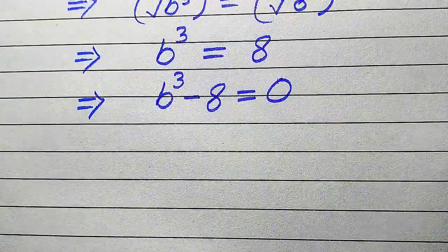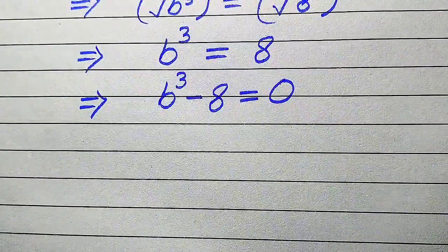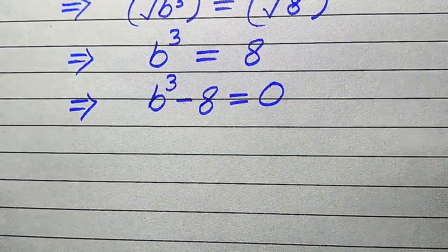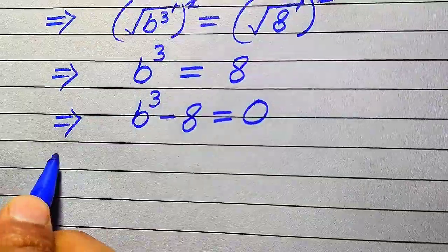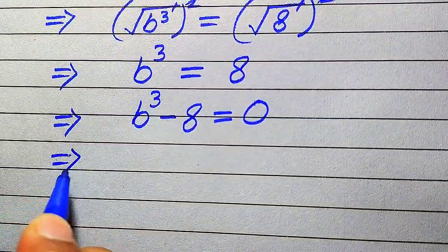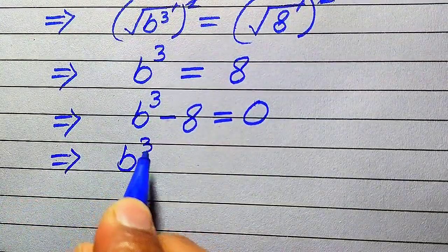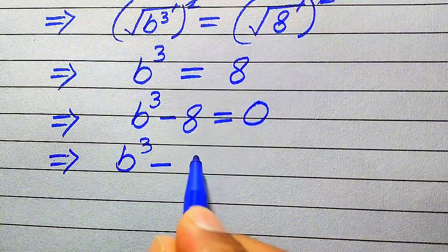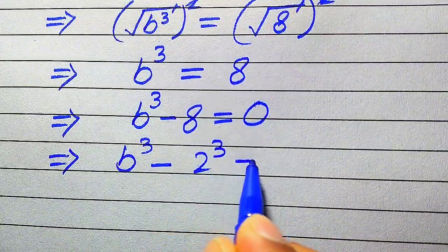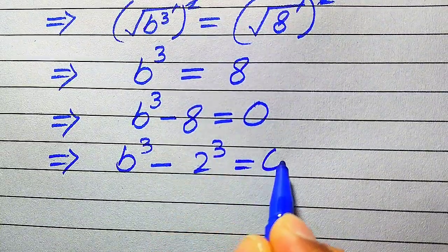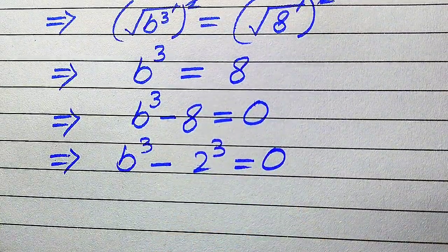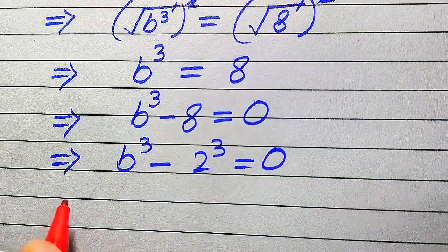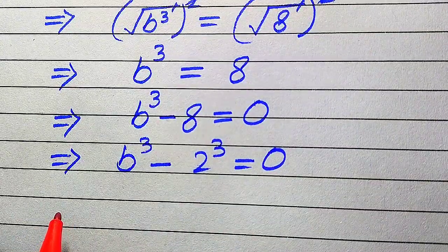We rewrite this equation as b cubed minus 8. We write this 8 into prime factors form, and the prime factors of 8 are 2 cubed, so the equation becomes b cubed minus 2 cubed equals to 0.